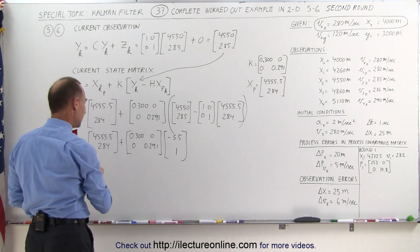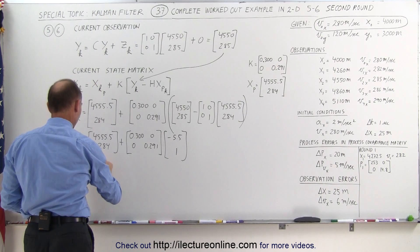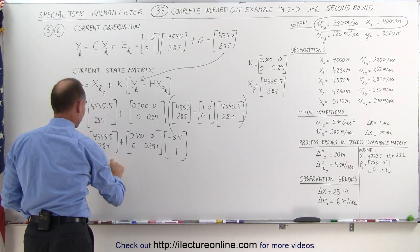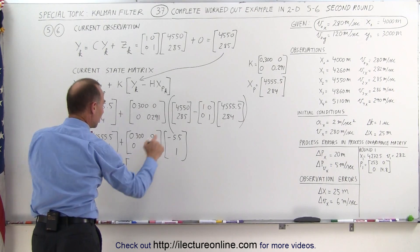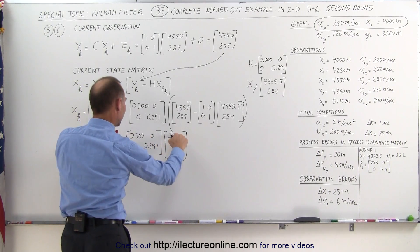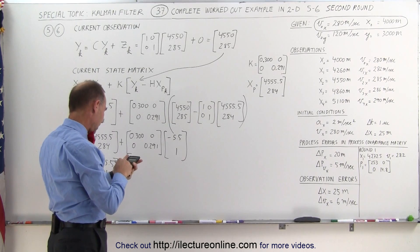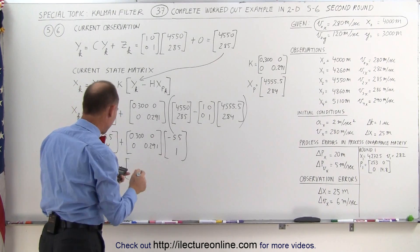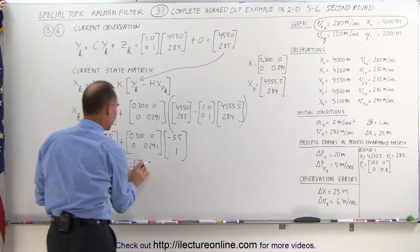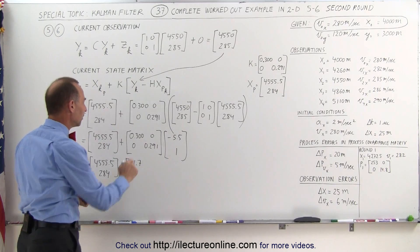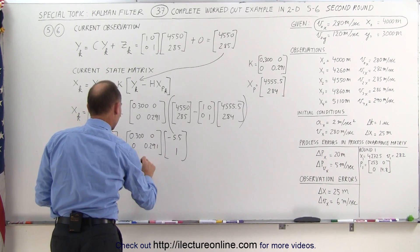So, this becomes the following. This is equal to 4555.5, 284, plus, now we have to multiply this, so this times this, this times that. 0.3 times 5.5, that's 1.65. Let's write it as a minus 1.7. I'll write it with one decimal place, and this times that. When we round that off, that would be a plus 0.3.